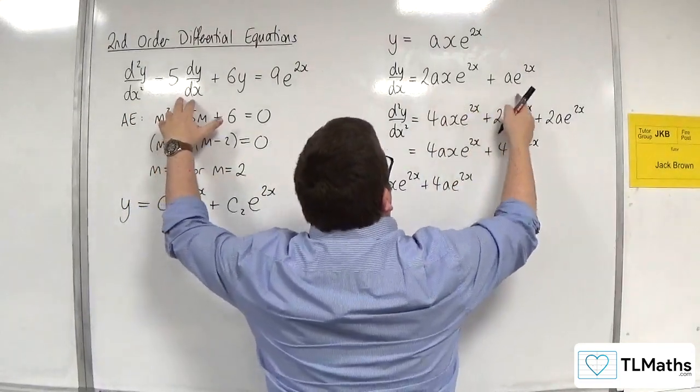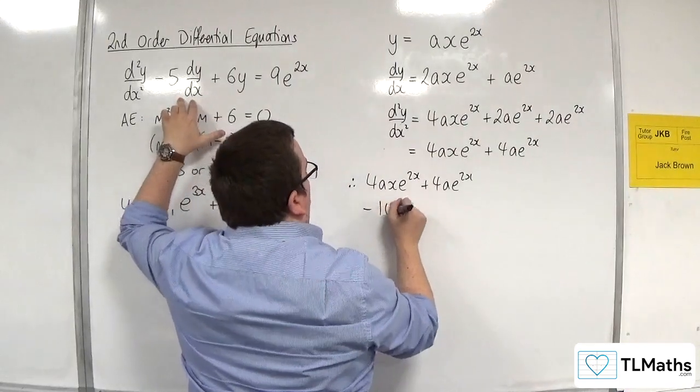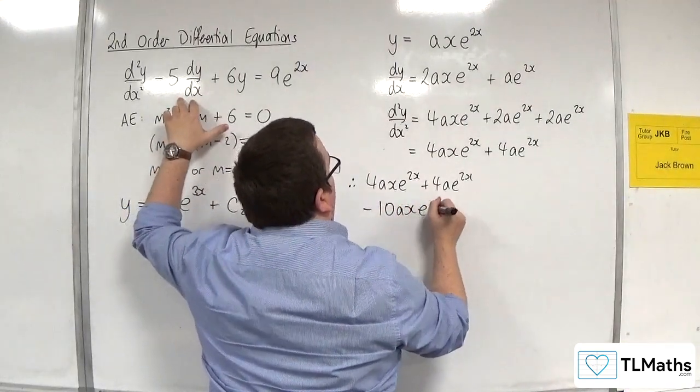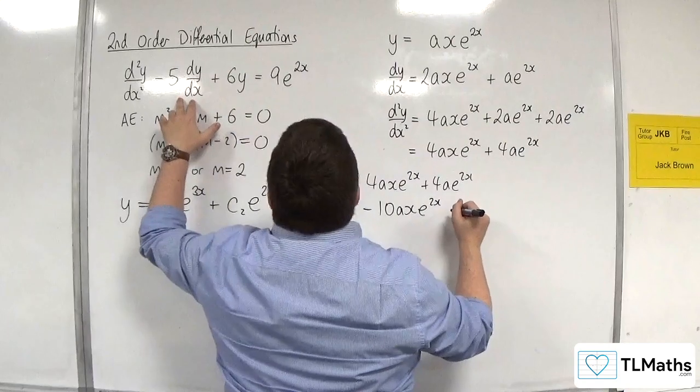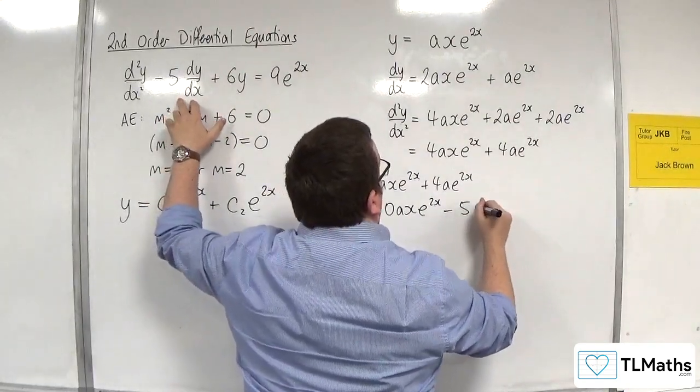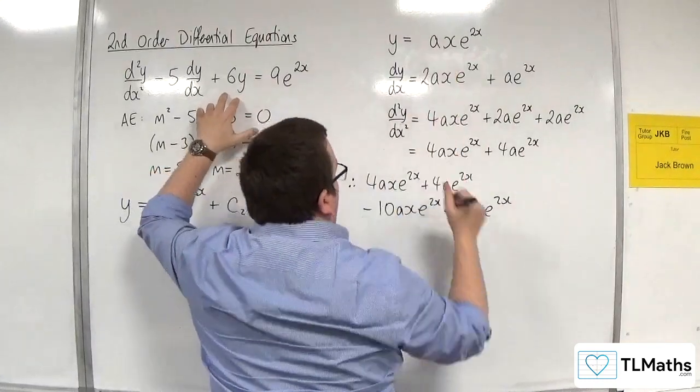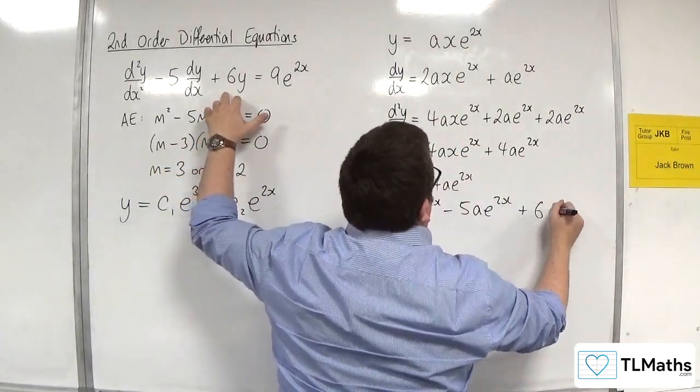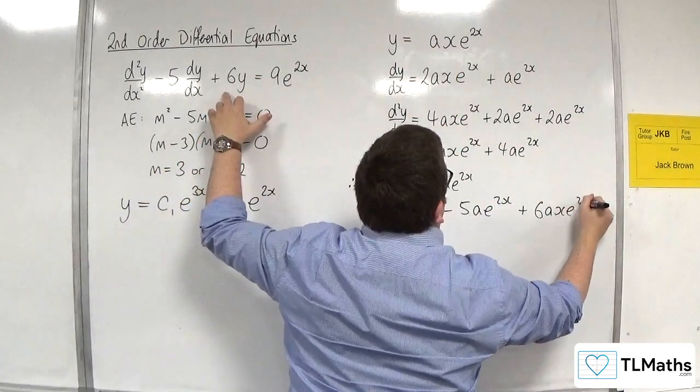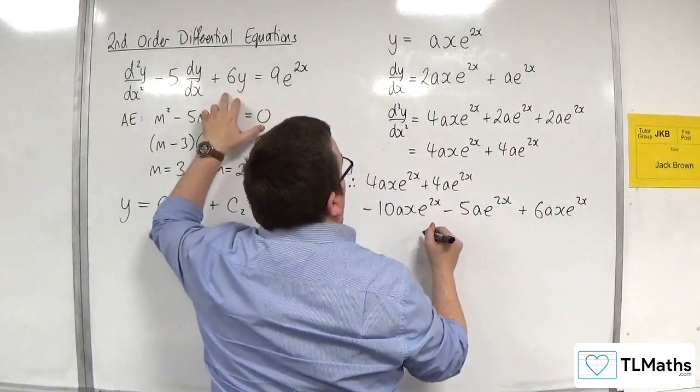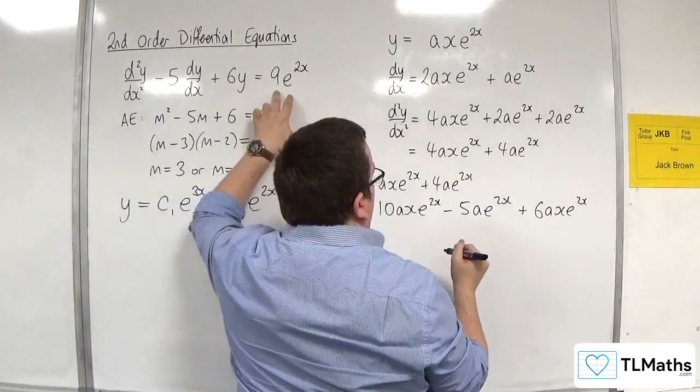So let's substitute everything in. We've got the 4axe to the 2x plus 4ae to the 2x, then take away 5 lots of this one, so take away 10axe to the 2x, take away 5ae to the 2x. Then we've got 6 lots of y, so plus 6 lots of axe to the 2x. That's going to be equal to 9e to the 2x.